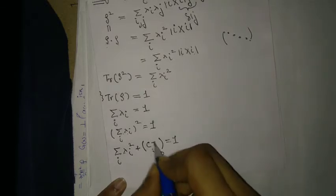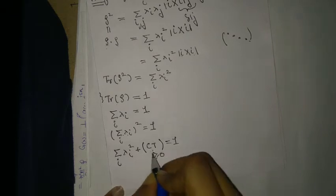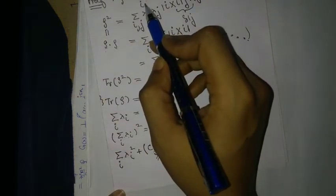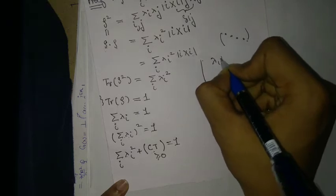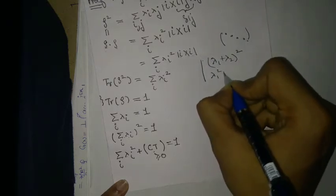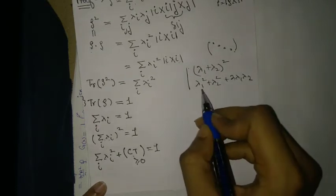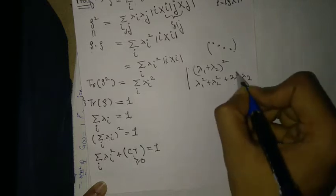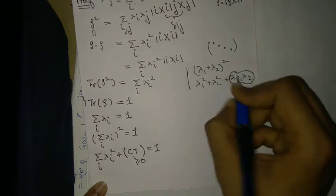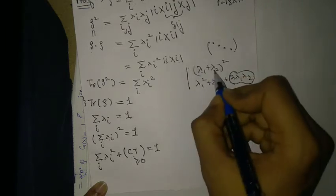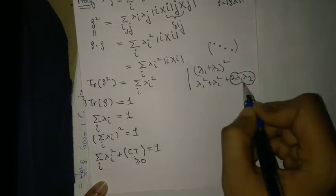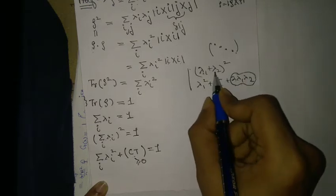The cross terms equal zero only when there is just one i, meaning only one basis vector contributes. For example, (λ₁ + λ₂)² = λ₁² + λ₂² + 2λ₁λ₂. The cross term 2λ₁λ₂ is zero only if λ₁ = 0 or λ₂ = 0. If λ₂ = 0 then λ₁ = 1, since λ₁ + λ₂ = 1.